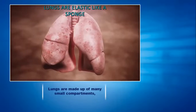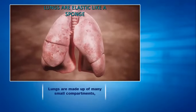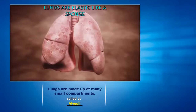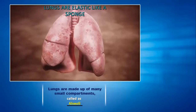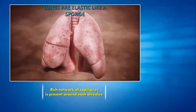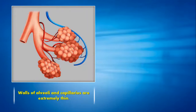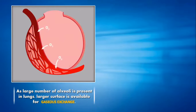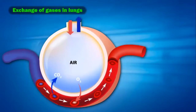Lungs are elastic like a sponge and are made up of many small compartments — they expand and contract continuously. The interior part where the up-and-down motion happens is called the alveoli. A rich network of capillaries is present around each alveolus. The walls of alveoli and capillaries are extremely thin so that breathing and gas exchange can happen easily. As a large number of alveoli are present in the lungs, a larger surface area is available for gaseous exchange. Carbon dioxide and oxygen are the two gases being exchanged.